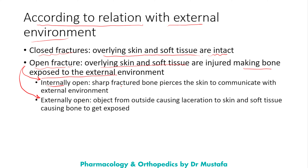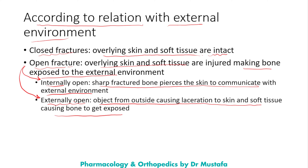In an internally opened fracture, the sharp fractured bone piece pierces through the skin to communicate with the external environment — the soft tissue damage comes from the sharp fractured bone. In an externally opened fracture, an object from outside causes laceration to the skin and soft tissue, exposing the bone.